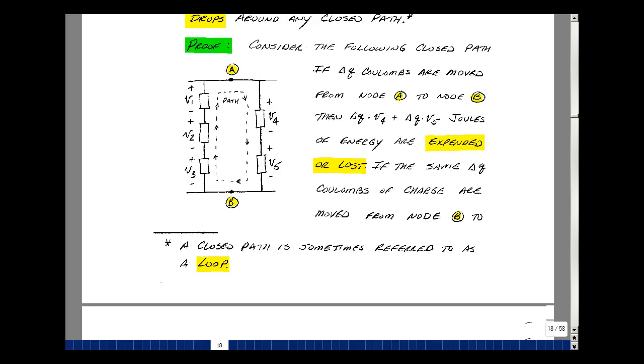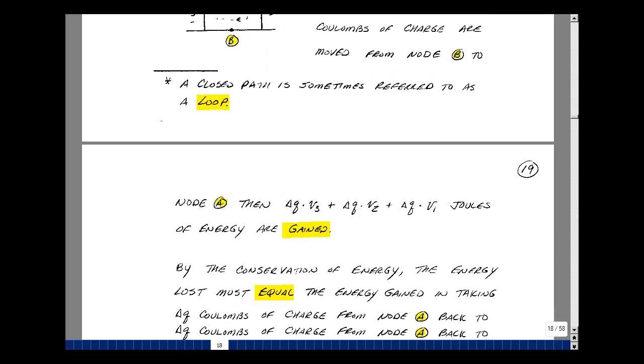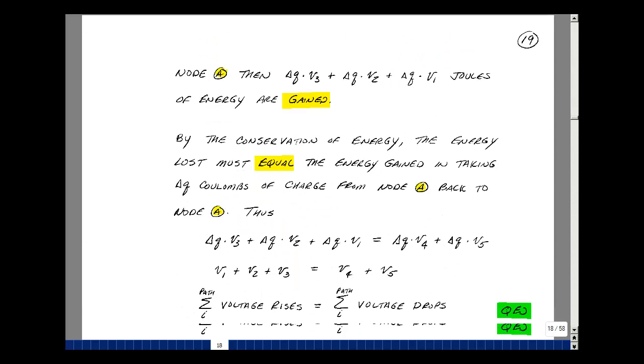Okay, now let's take those two results and set them equal to each other. So the energy that we lost was the change in charge times V4, change in charge times V5, and what we picked up was that change in charge times V3, same change in charge times V2, same change in charge times V1. But the charge is common to each of the terms here, so they cancel. And what we're left with are the rises in voltage equaling the drops in voltage, and that's Kirchhoff's voltage law.